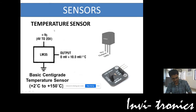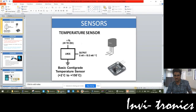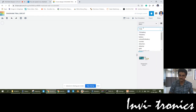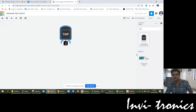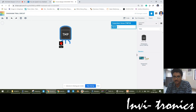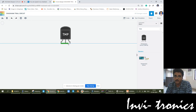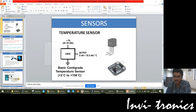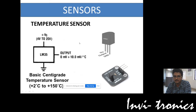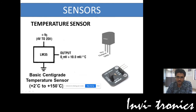Next, we will see the temperature sensor. For this we are using LM35, and in TinkerCAD we also have the TMP35 temperature sensor. This temperature sensor has three terminals: power, ground, and output. In LM35, we are having three terminals — VCC, output, and ground. The output is: 0 mV + 10 mV per degree centigrade.